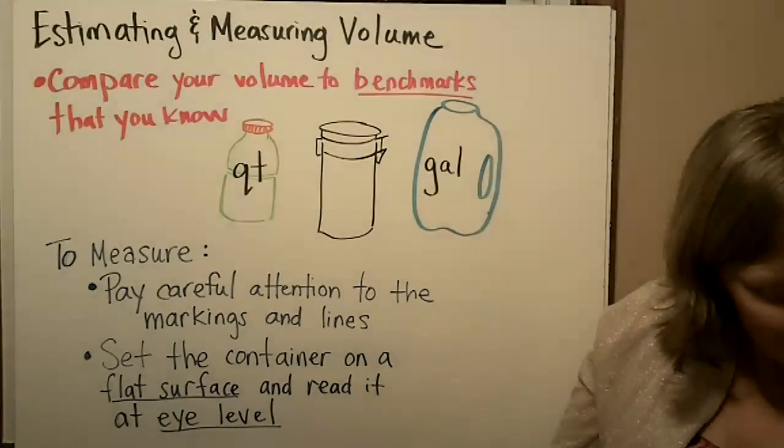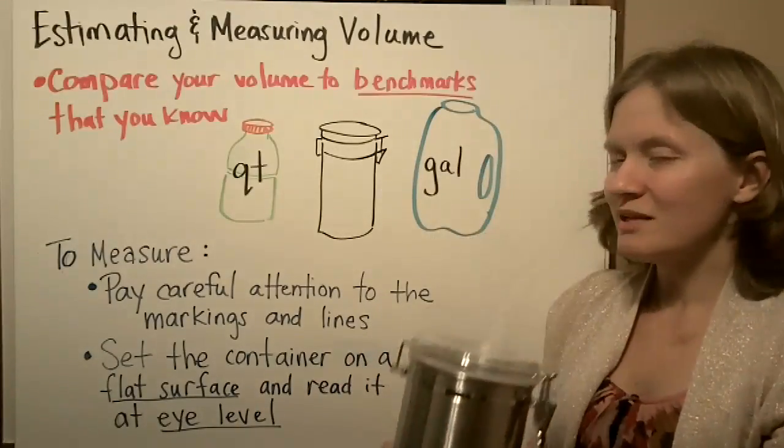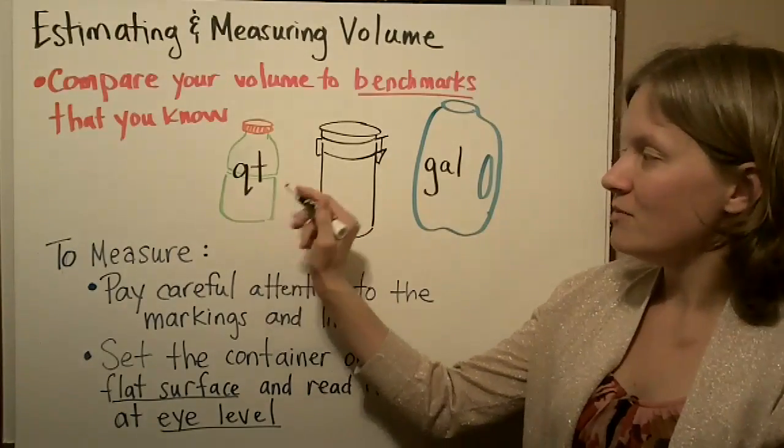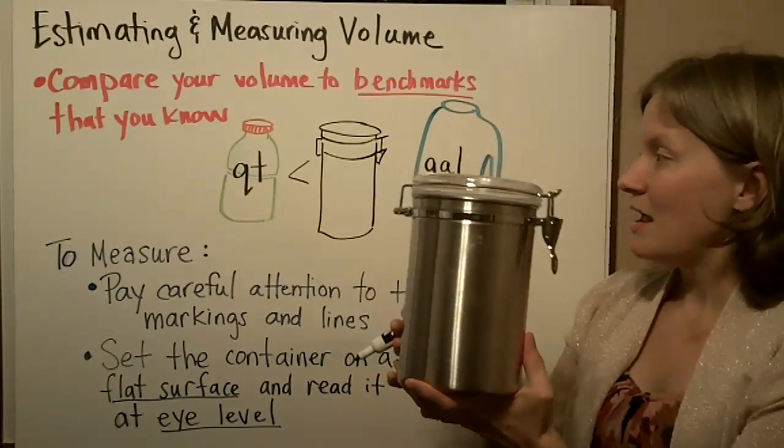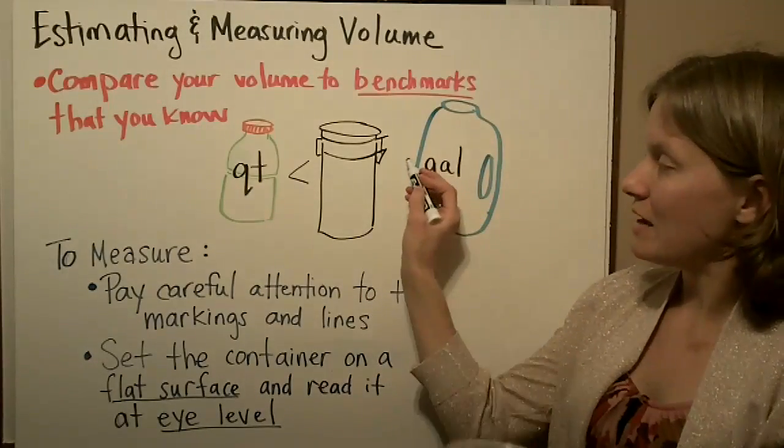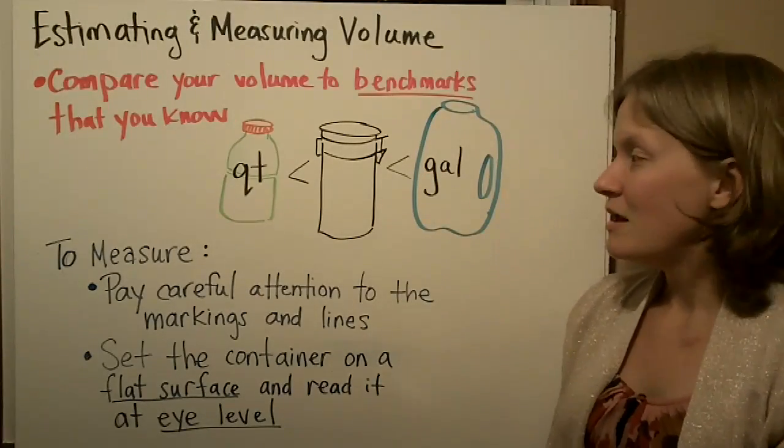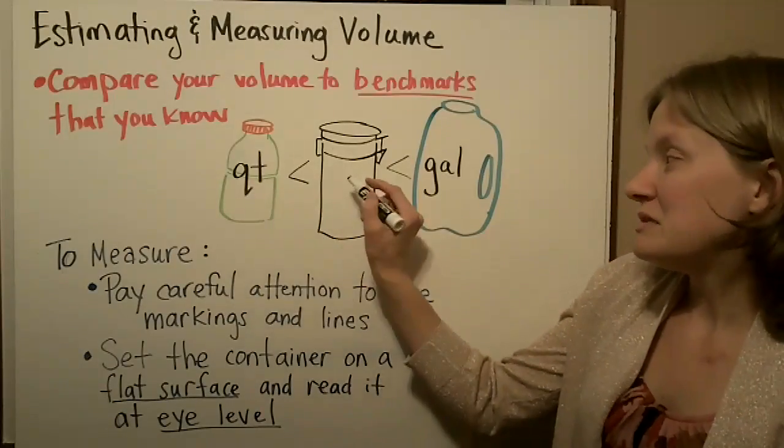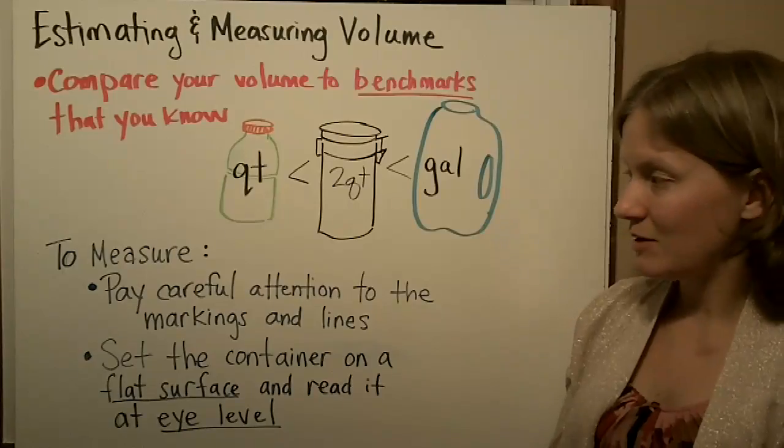For example, if I'm trying to estimate the volume of this container, I'd first think about the Gatorade container. I know its volume is less than this one. Then I think about the milk jug, which is bigger than this container. So this container is somewhere between a quart and a gallon. Two quarts would be a good estimate.